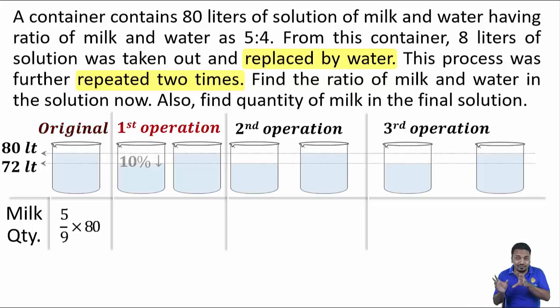There is a decrease of 10%. 8 out of 80 is a decrease of 10% in the mixture volume. So, both milk and water quantities will go through the same 10% decrease.